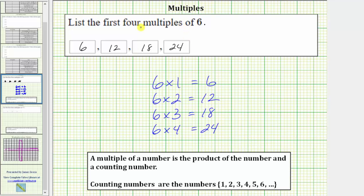You may also notice another pattern in the multiples of six. Notice six plus six equals 12, 12 plus six equals 18, and 18 plus six equals 24.